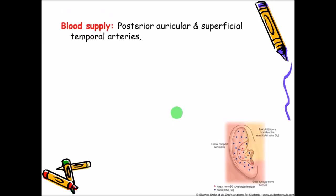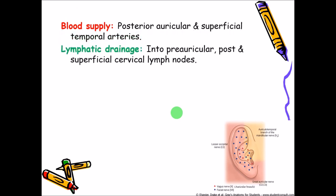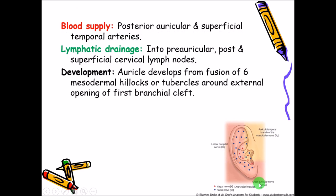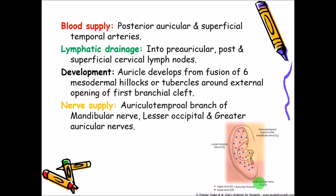The blood supply is mainly by the posterior auricular and superficial temporal arteries. The lymphatic drainage is into the pre-auricular group of lymph nodes, the posterior group of lymph nodes, and then to the superficial cervical group of lymph nodes. The auricle develops from the fusion of six mesodermal hillocks around the first branchial cleft.